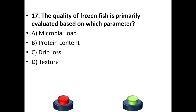Seventeenth question: The quality of frozen fish is primarily evaluated based on which parameter? Options: microbial load, protein content, drip loss, texture. The answer is option C — drip loss.